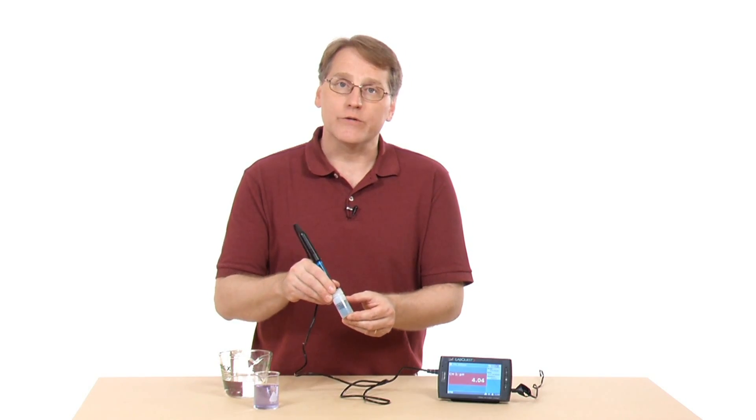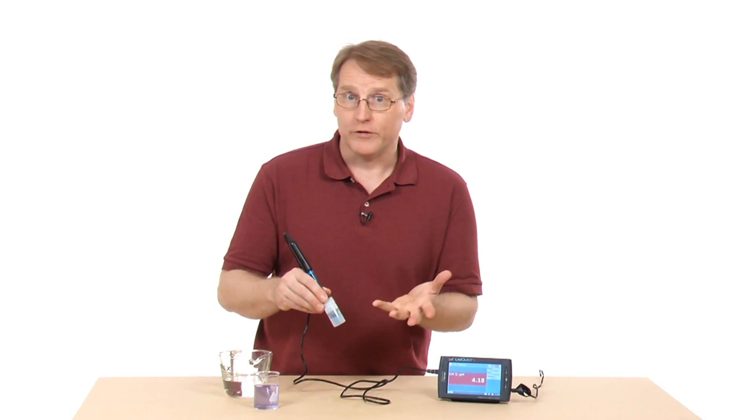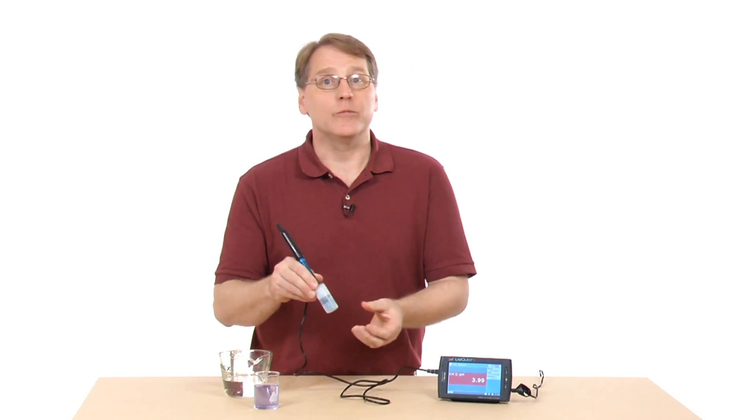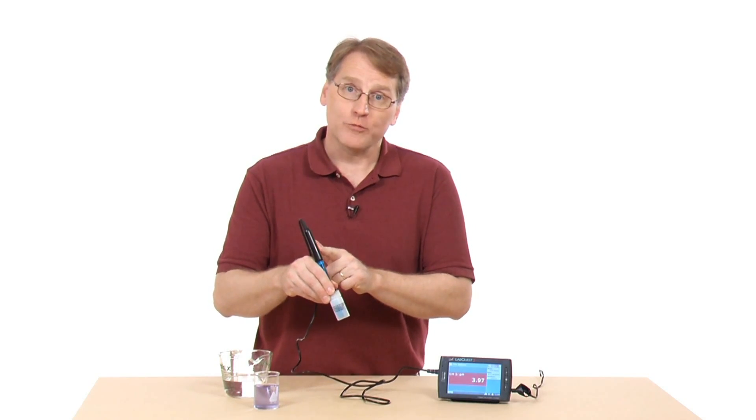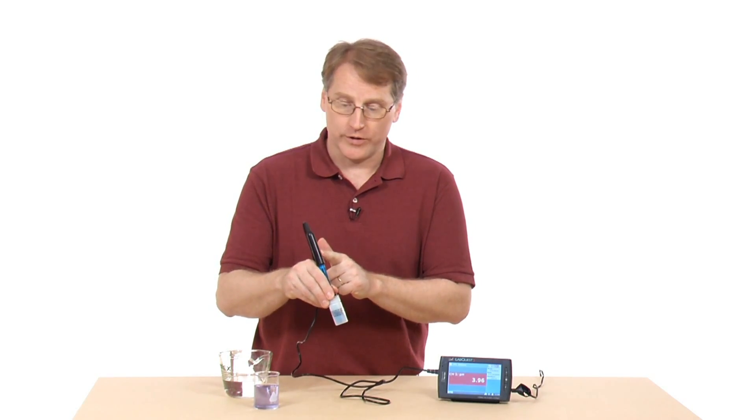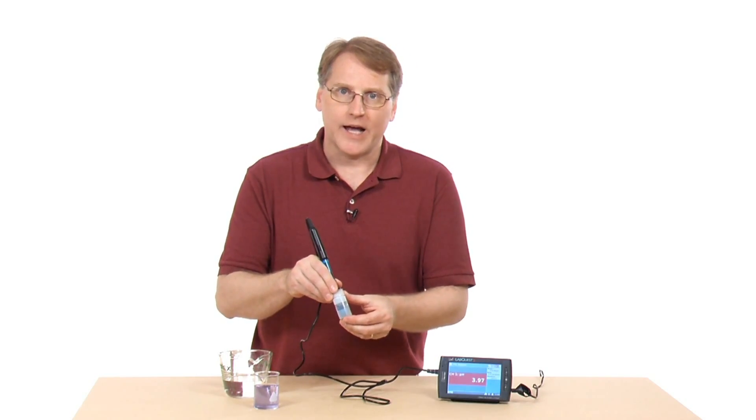To do this, you put it into known conditions. You might put it into a pH 4 buffer solution and tell it that's what it is, then move it into say a 10 and tell it that's what it is. Then you can actually store that to the sensor. This is a smart sensor that has built-in storage capacity, so you can save that calibration.